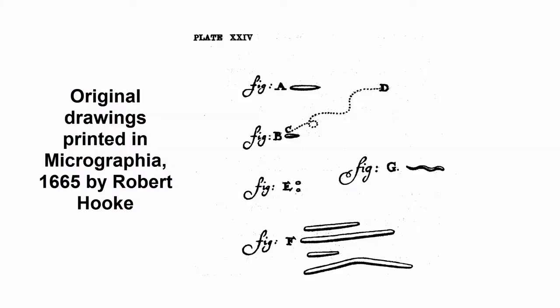Surprisingly, Leeuwenhoek's very simple microscope, which allowed much greater magnification, allowed him to see and describe things that happen inside a cell. He described bacteria that he found from scrapings from his mouth, and one of the things that he found was these little molecules or animalcules that swam around in a solution.